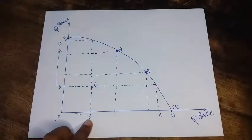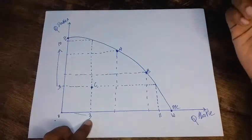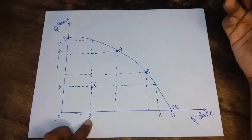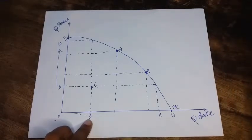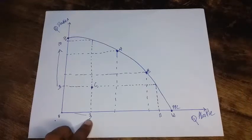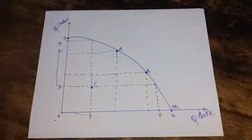So how is it that a firm can produce more without having to give up from another good? And this happens when we have things like idle resources, not using your technology to the fullest.